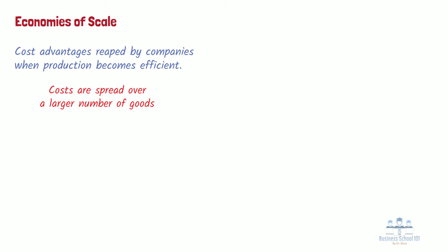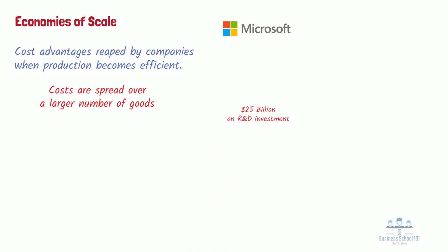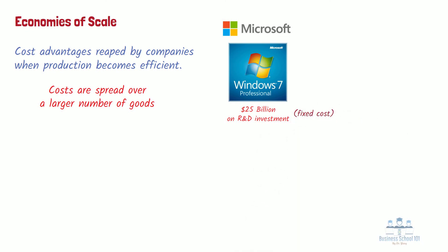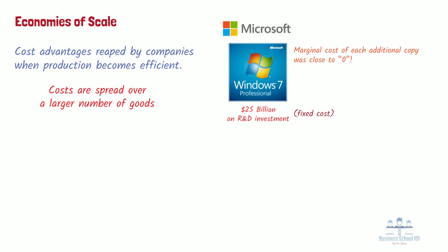Let's use Microsoft's operating system as an example. Between 2007 and 2009, Microsoft spent around $25 billion on research and development to develop its new Windows 7 operating system. This R&D expense was a fixed cost Microsoft had to incur before a single copy of Windows 7 was sold. However, once the initial version of the new software was completed, the marginal cost of each additional copy was close to zero, especially for copies sold online. So, if Microsoft only sells 1 million copies of Windows 7, the average cost will be $25,000 per copy. However, if Microsoft can sell 1 billion copies, the average cost will be reduced to $25.